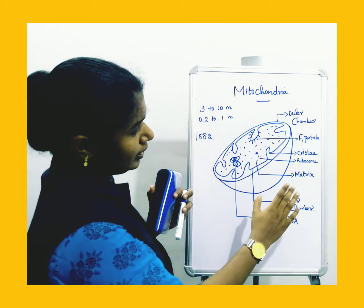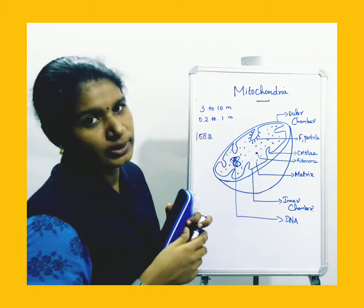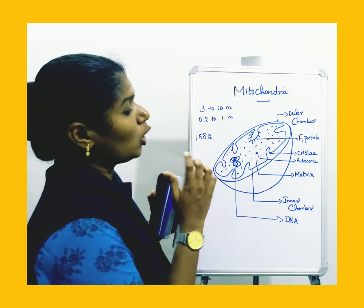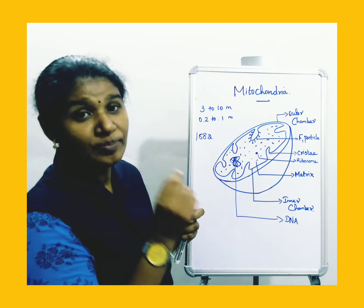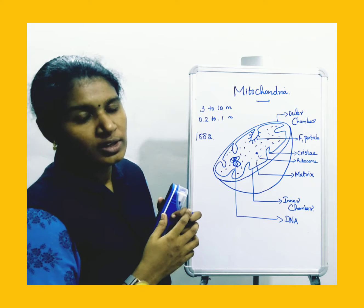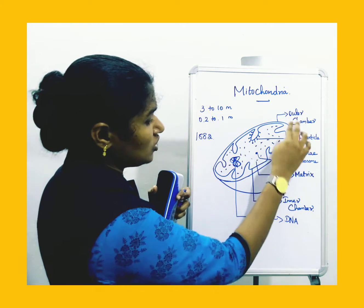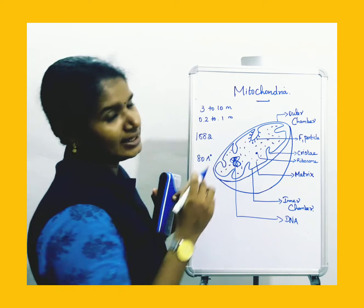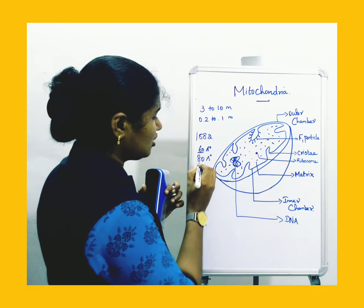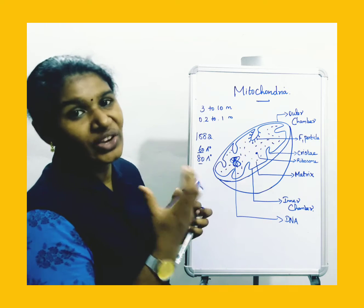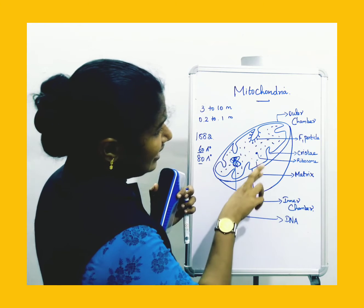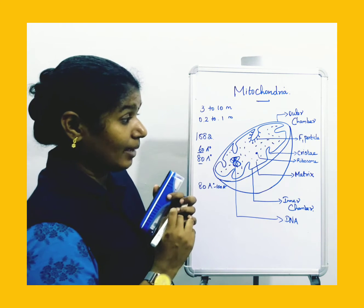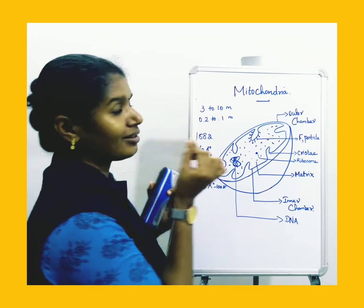The structure of mitochondria has two chambers: the outer region and inner region, with an outer membrane and an inner membrane. These are the two protective membranes of the mitochondria. Each membrane is measured at nearly 60 to 80 Angstroms in thickness. The gap between the outer and inner membrane is measured at 80 to 100 Angstroms.